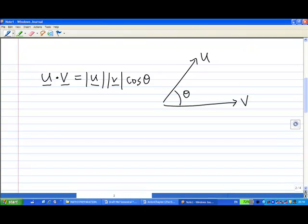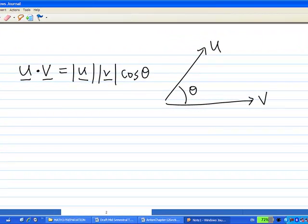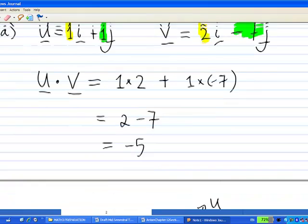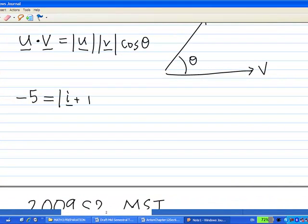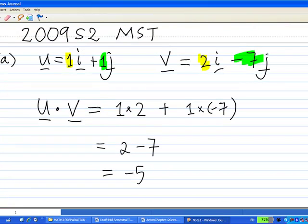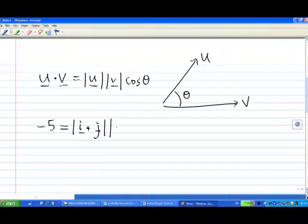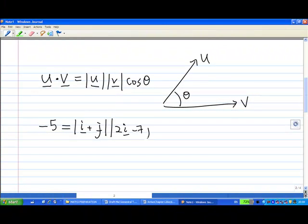So, by doing this, we know that earlier, our result of u dot v was minus 5. And what is the magnitude of u? The modulus of u, we find that u is i plus j, right? So we write down modulus of u is modulus of i plus j. And modulus of v. Now, v we have is 2i minus 7j, so we put down 2i minus 7j for v modulus and then cos theta.